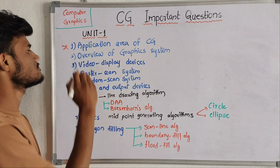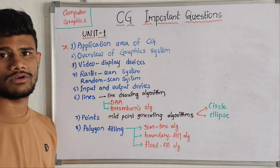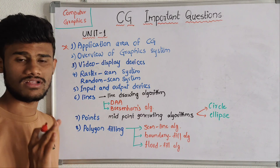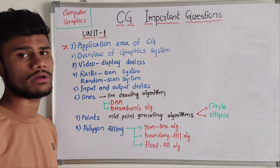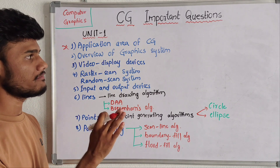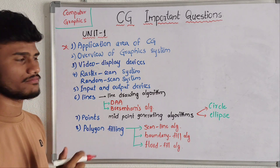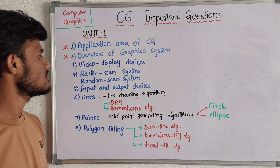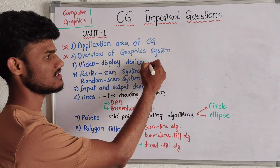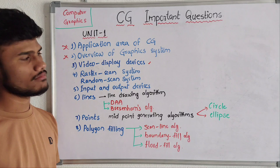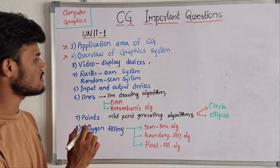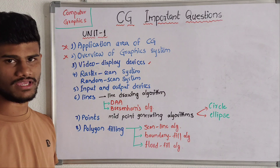The next important question is the overview of graphic systems — the overall concept of this graphic system, explaining the main basic concepts. This is also an important question. Then next we have video display devices, which is not much important but just touch it.